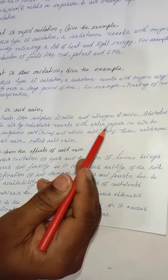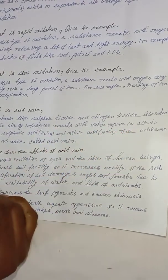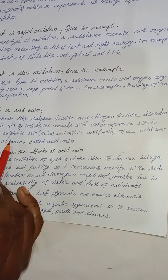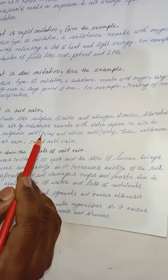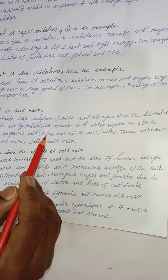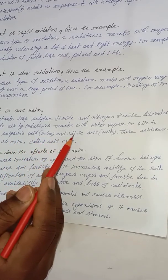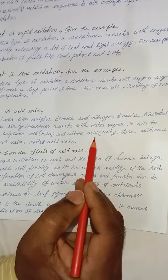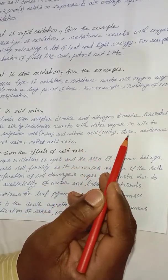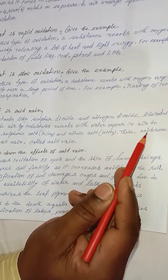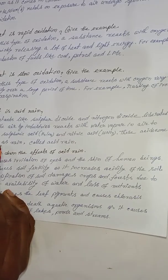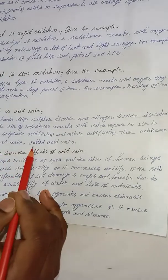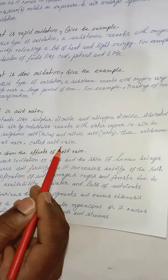Industries release sulfur dioxide and nitrogen dioxide into the air, which react with water vapor in the atmosphere to form sulphuric acid (H2SO4) and nitric acid (HNO3). These acids come down as rain, which is called acid rain.